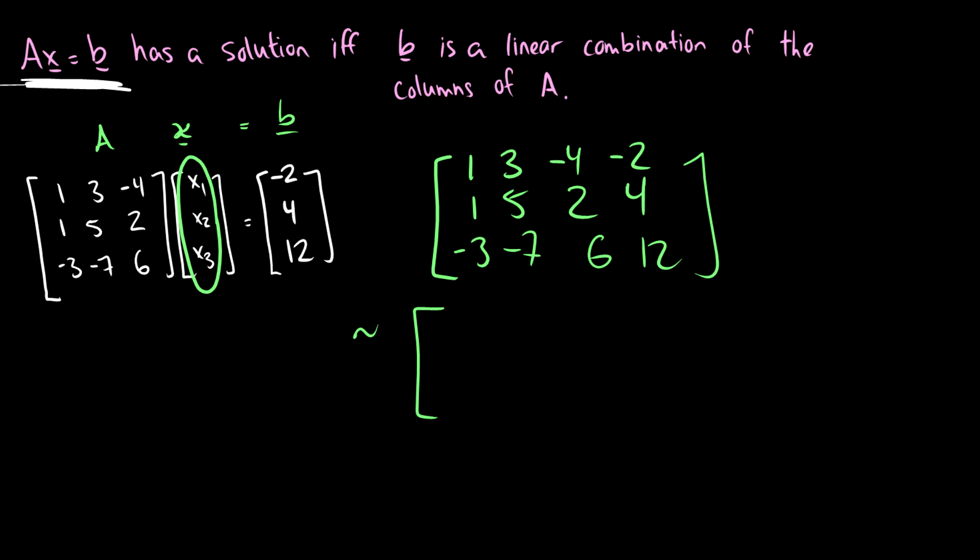What we can do is we can take the top row. We can leave that the same. So we have 1, 3, negative 4, negative 2. And the second row we can subtract the first row from it. So 1 minus 1 is 0, 5 minus 3 is 2, 2 minus negative 4 is 6, 4 minus negative 2 is 6.